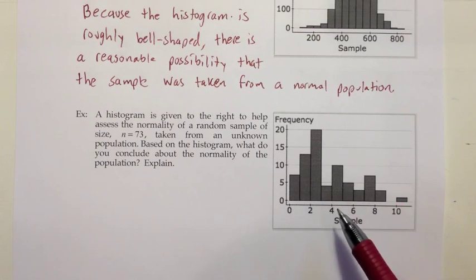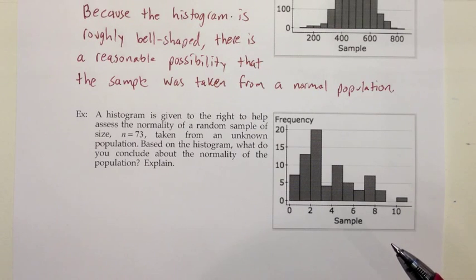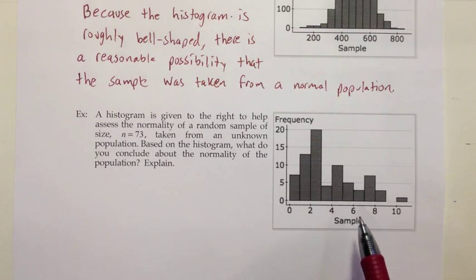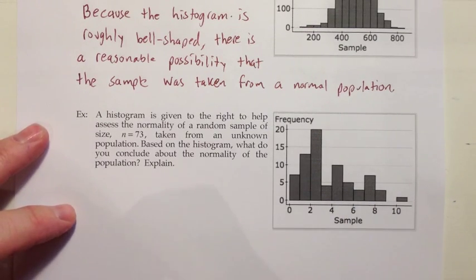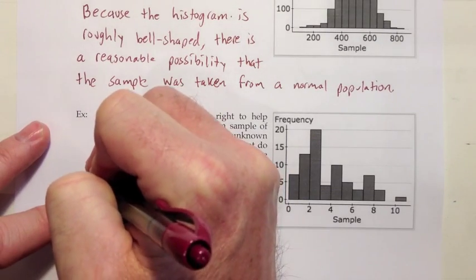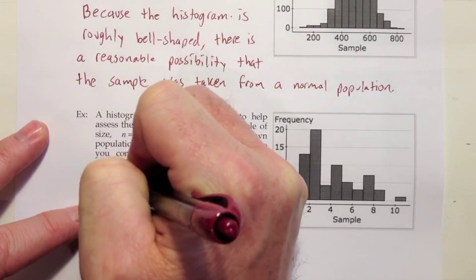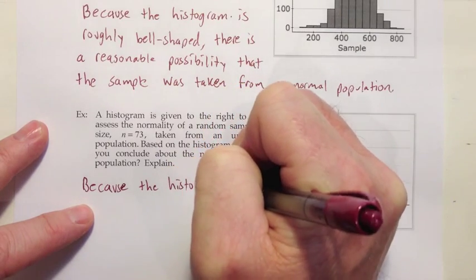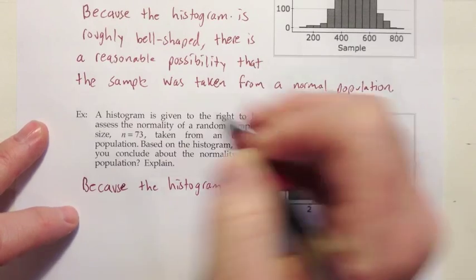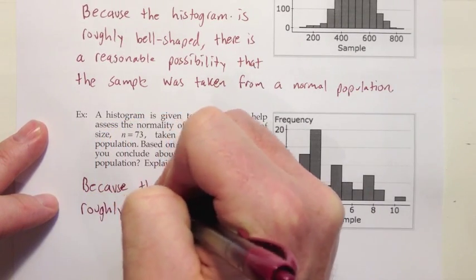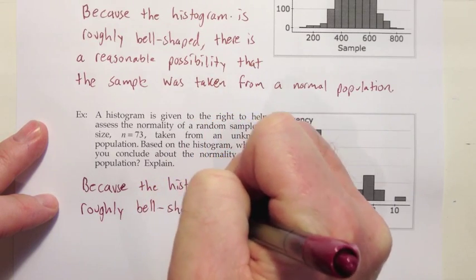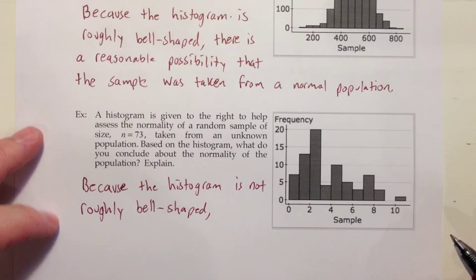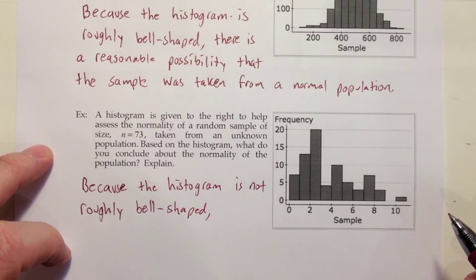Because this doesn't look roughly bell-shaped, I would conclude that the population is not bell-shaped. I don't know what the population is for sure — maybe it's right skewed, severely right skewed. But it doesn't seem bell-shaped because the peak is too far off from the center and the tails are too out of balance. Because the histogram is not roughly bell-shaped, I'm going to conclude that the sample did not come from a normal population.